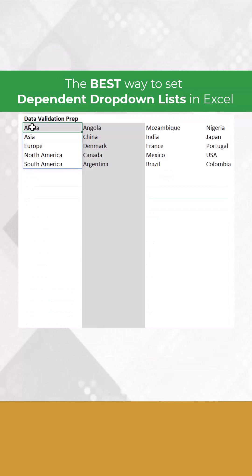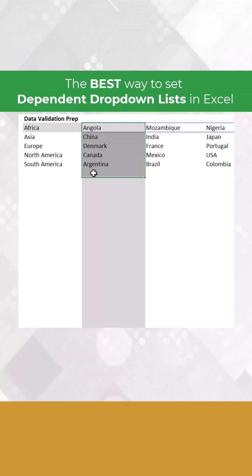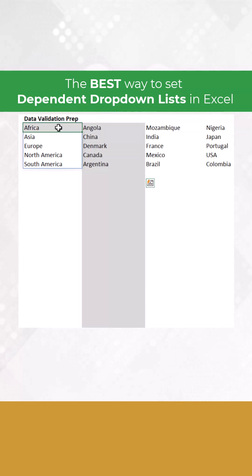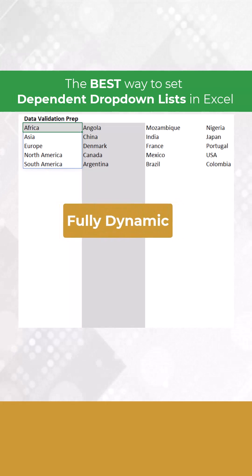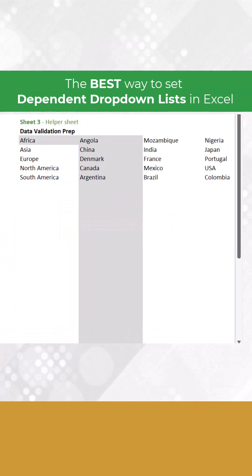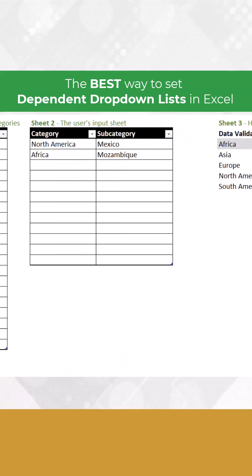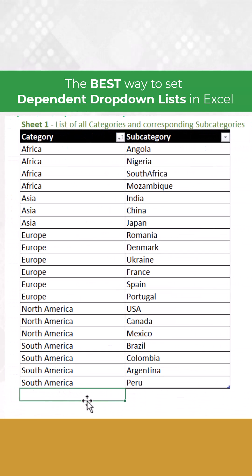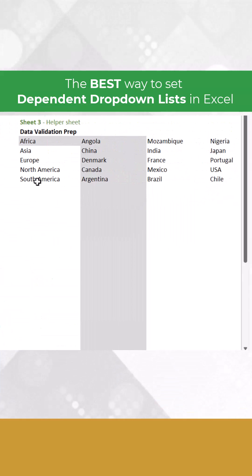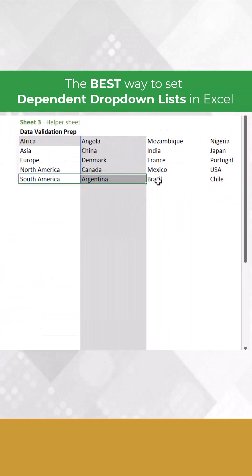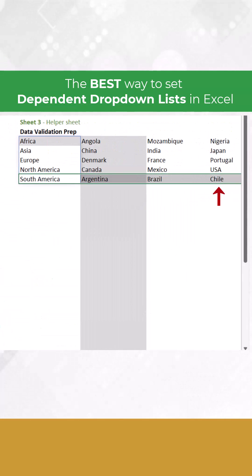In here, I have a helper structure composed of different formulas. The great thing about this is that all this structure is dynamic. If I add a new country to South America — let's say Chile — we can see here that South America now has Chile.